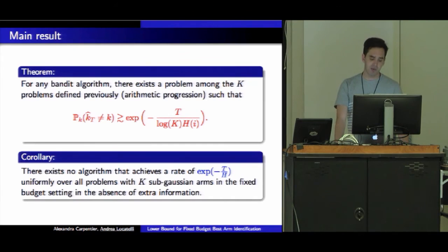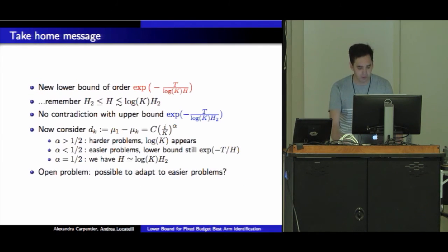What happens is that for any bandit algorithm, there exists a problem among just these K problems that are really restricted such that the algorithm will have error exponential minus t over log K times H. We've improved the bound and coded this log K in the bound. A simple corollary is we cannot have an algorithm that without extra information can match this exponential minus t over H rate. It means we need to find a better algorithm.